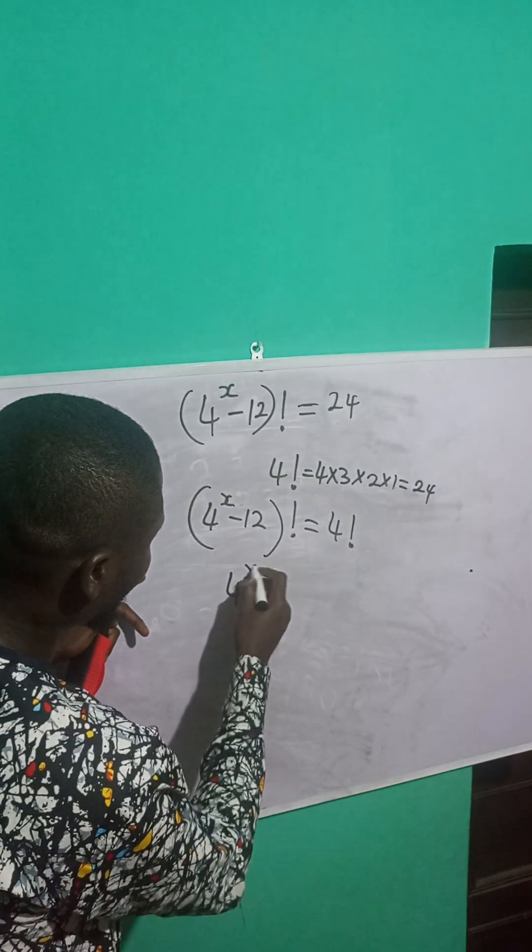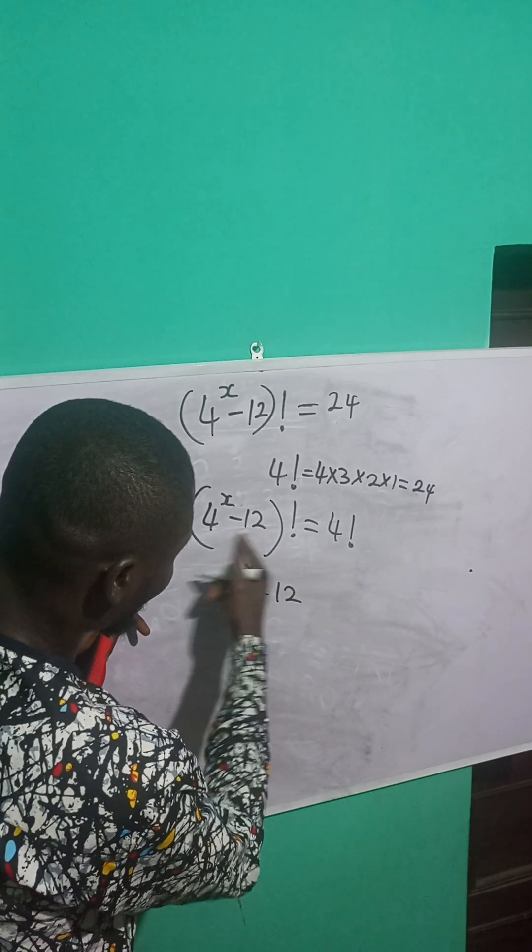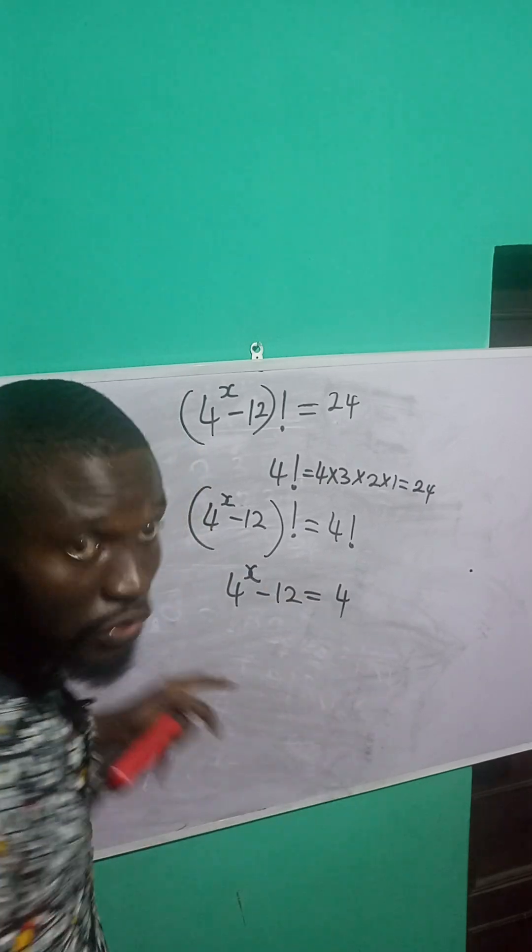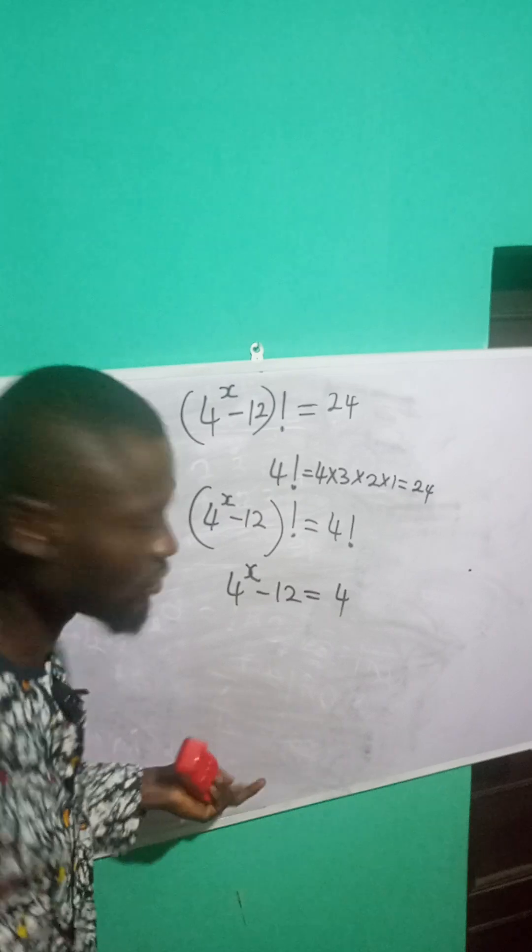So this is 4 raised to power x minus 12. What we have here is equal to what? 4. So we are comparing the two values now.